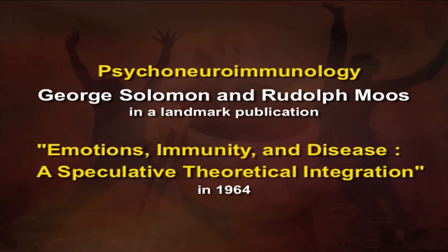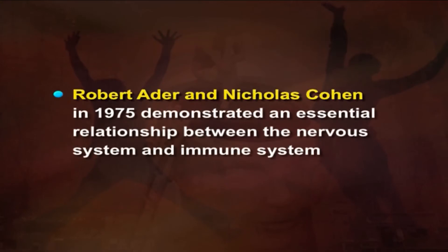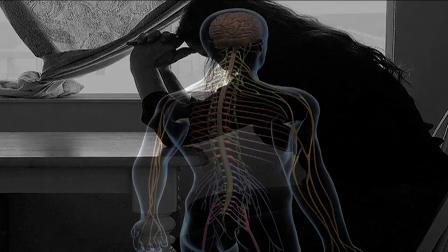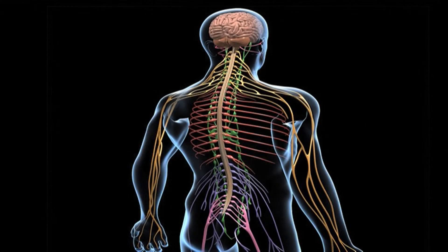This publication appeared in 1964. Later, path-breaking research in this field by Robert Adler and Nicholas Cohen in 1975 demonstrated an essential relationship between the nervous system and the immune system. And as we know, the stress response actually begins with an activation of the nervous system.